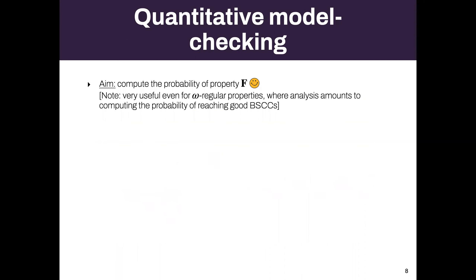In fact, this applies not only to reachability in Markov chains, but also to more complex omega-regular properties. Often the probability of omega-regular properties amounts to finding the reachability value. For instance, in finite Markov chains this amounts to finding BSCCs — bottom strongly connected components — and checking reachability to those BSCCs. I will mostly focus on reachability properties.